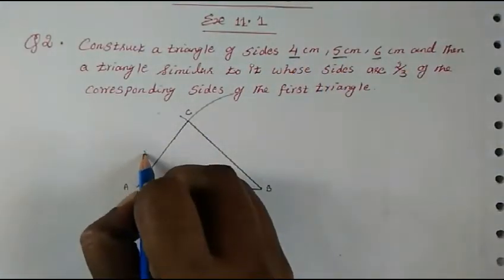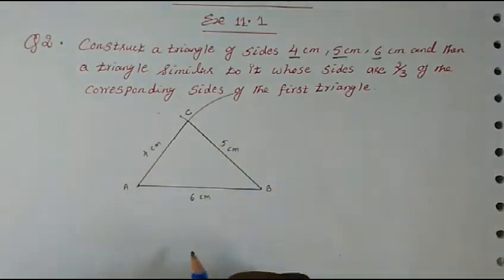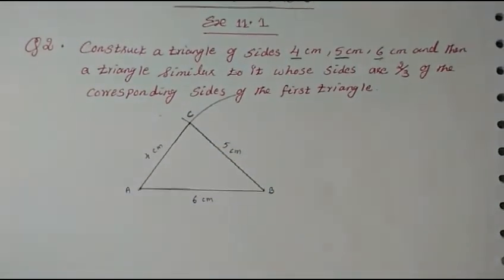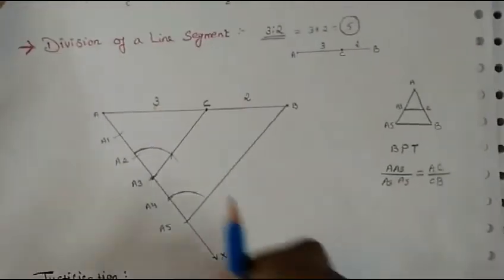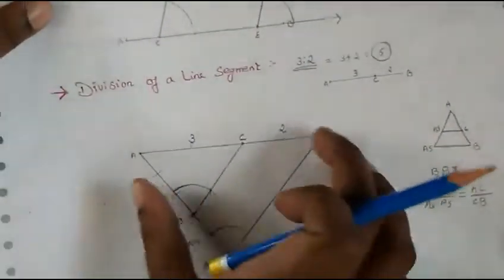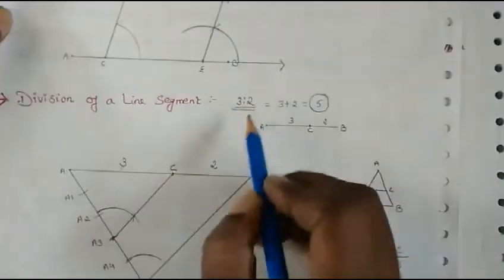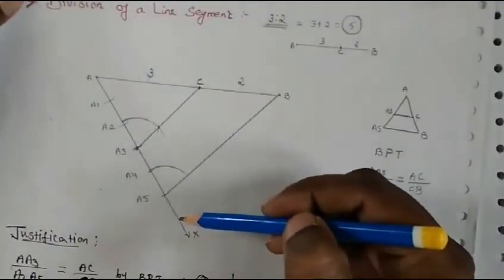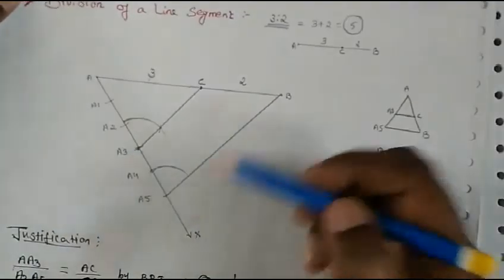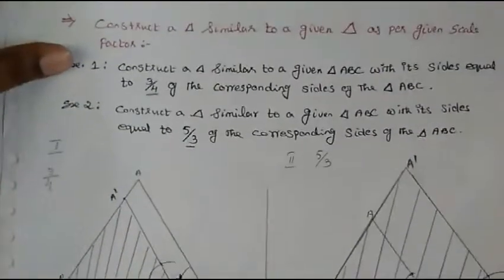We have constructed a triangle of sides 4 centimeters, 5 centimeters, and 6 centimeters. This is 4 centimeters, this is 5 centimeters. In the introduction, I have taught you that when you have to divide a line segment, we sum up the ratio and make that many parts.